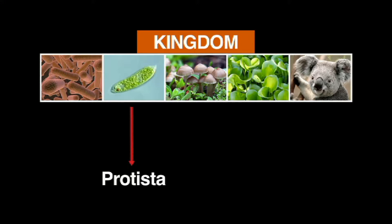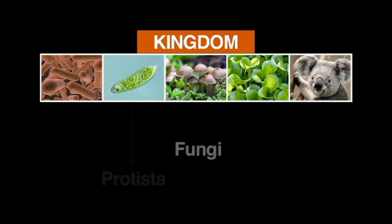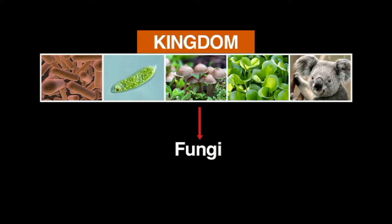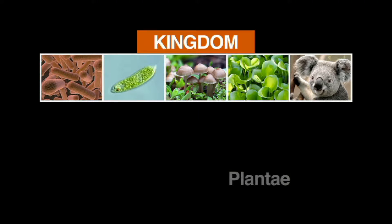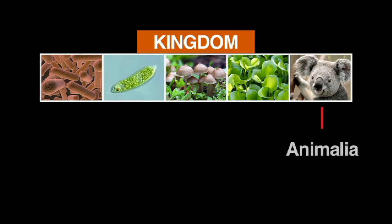Protista includes all one-cell life forms with a nucleus, like the amoeba. Kingdom Fungi is comprised of living organisms such as the mushroom. Kingdom Plantae includes grasses, flowers, and trees. And Kingdom Animalia includes all the animals found on Earth.